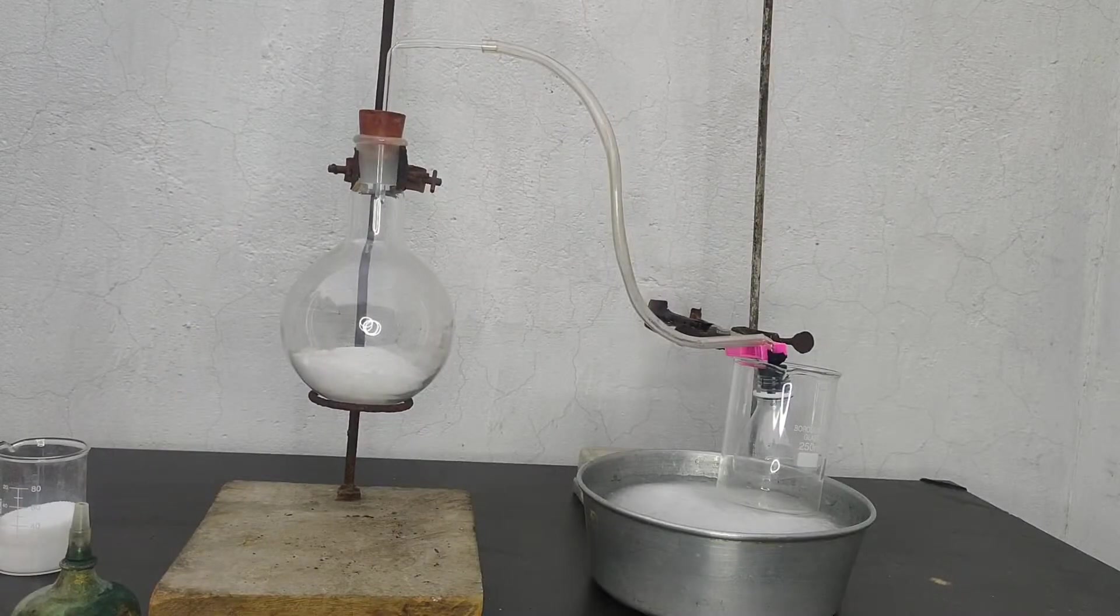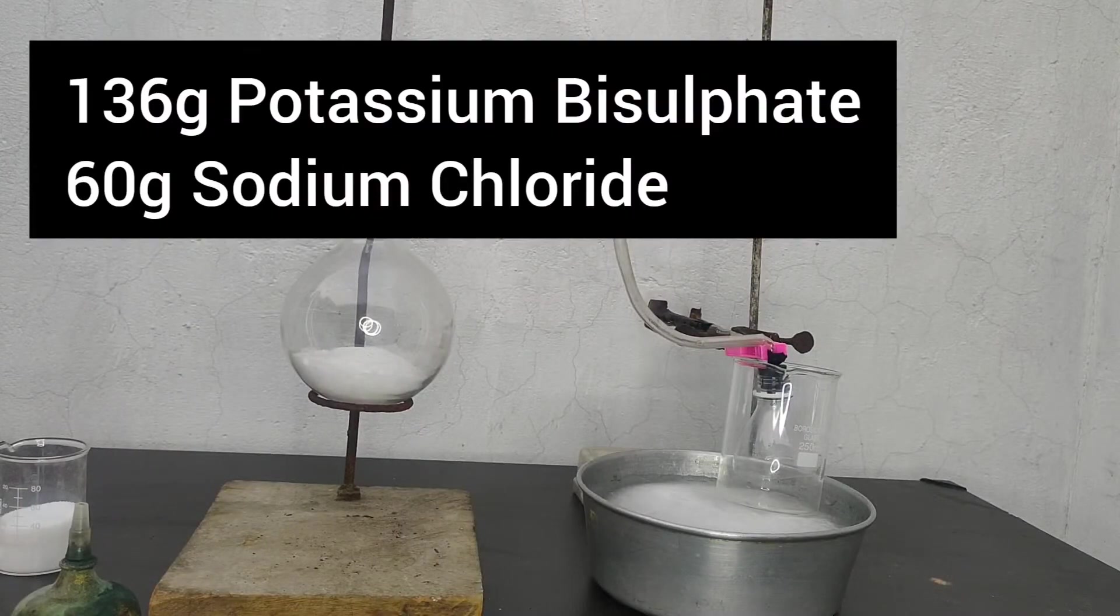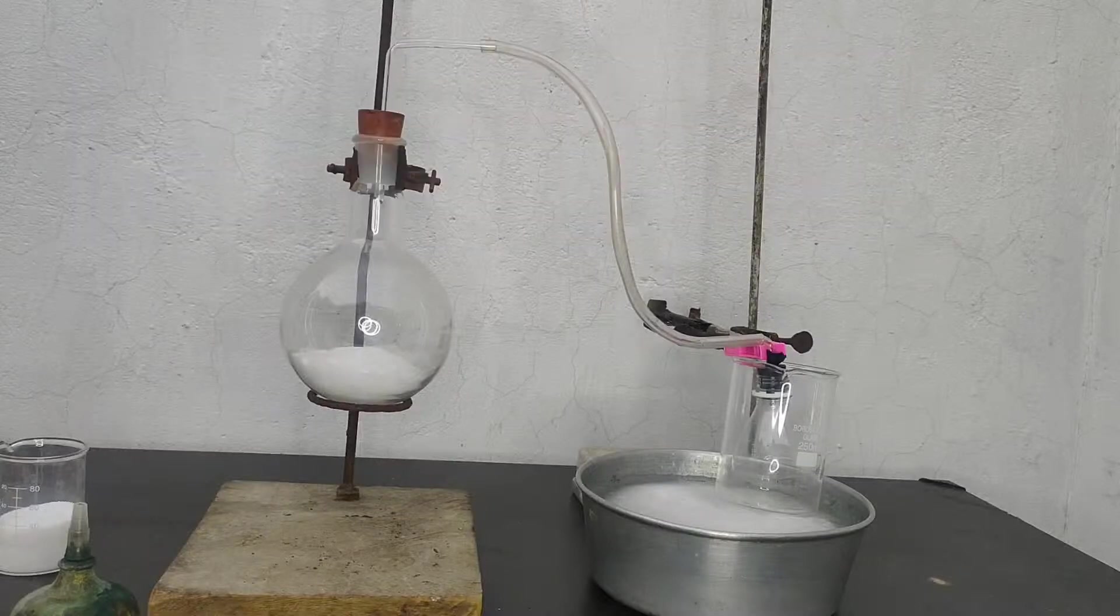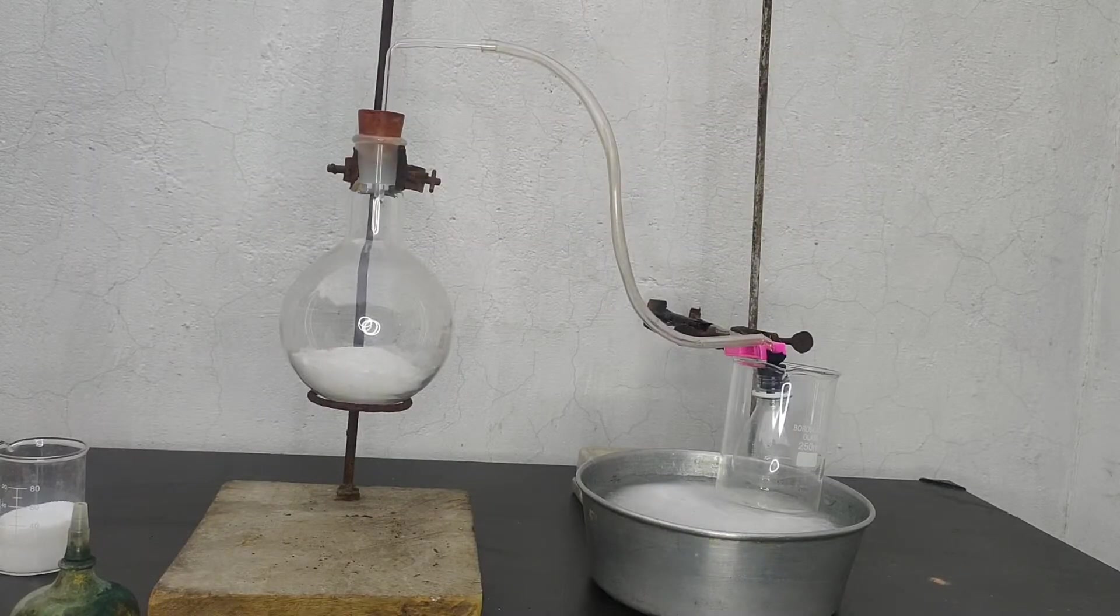In the previous video, we prepared nitric acid and potassium bisulphate was formed as the byproduct. So, from that potassium bisulphate, I will be preparing hydrochloric acid.